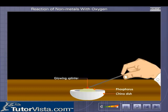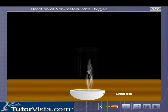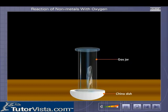Burn the phosphorus with the help of a glowing splinter. Cover it with an inverted gas jar.